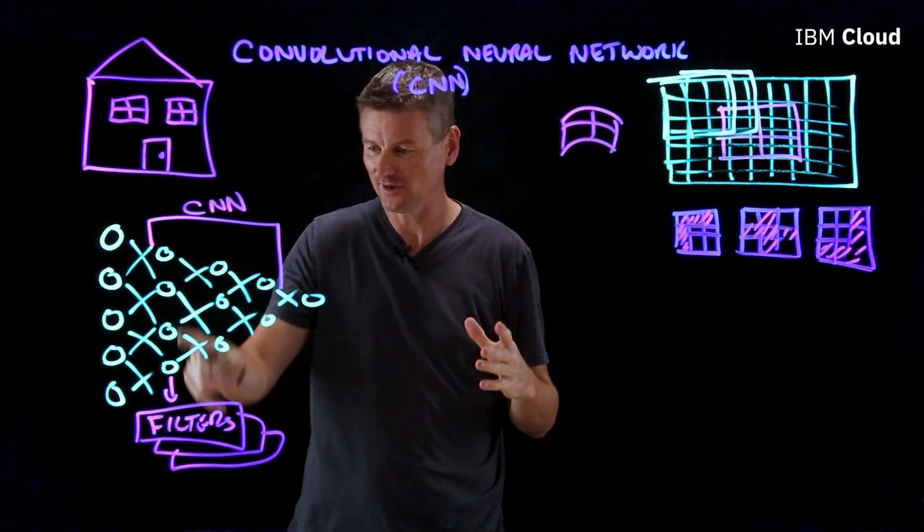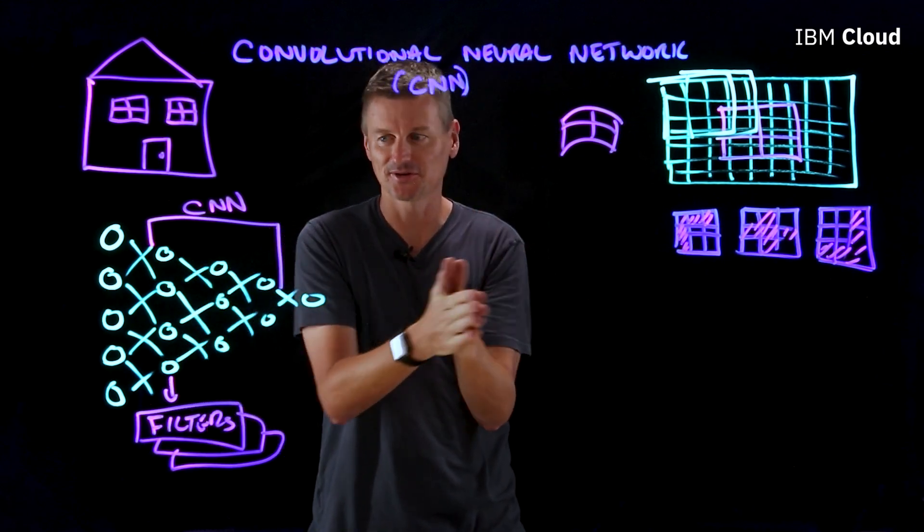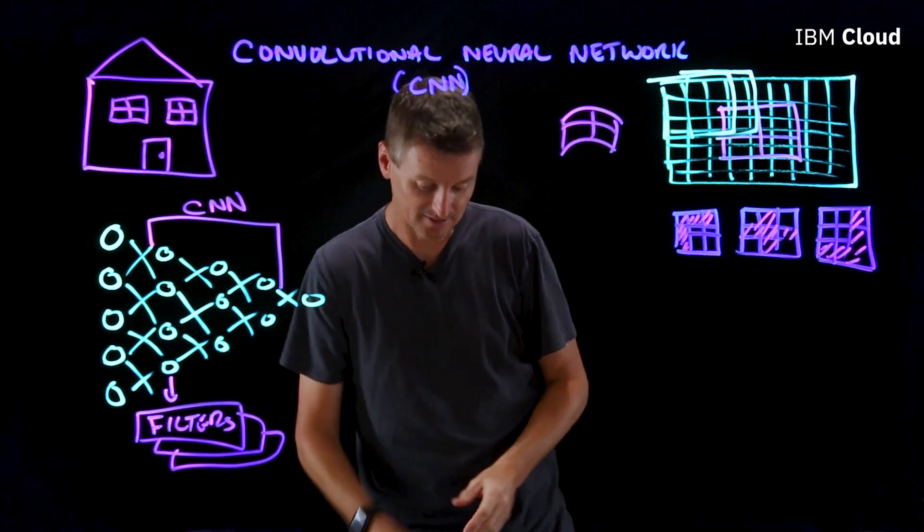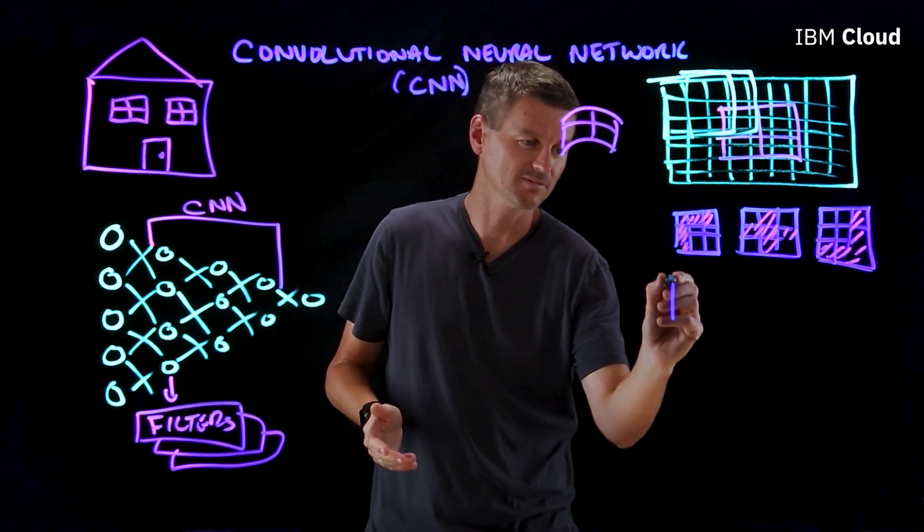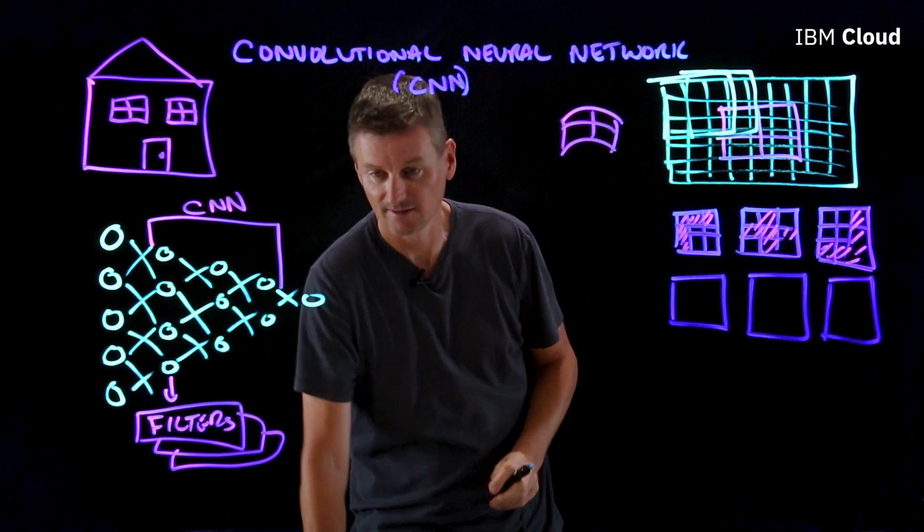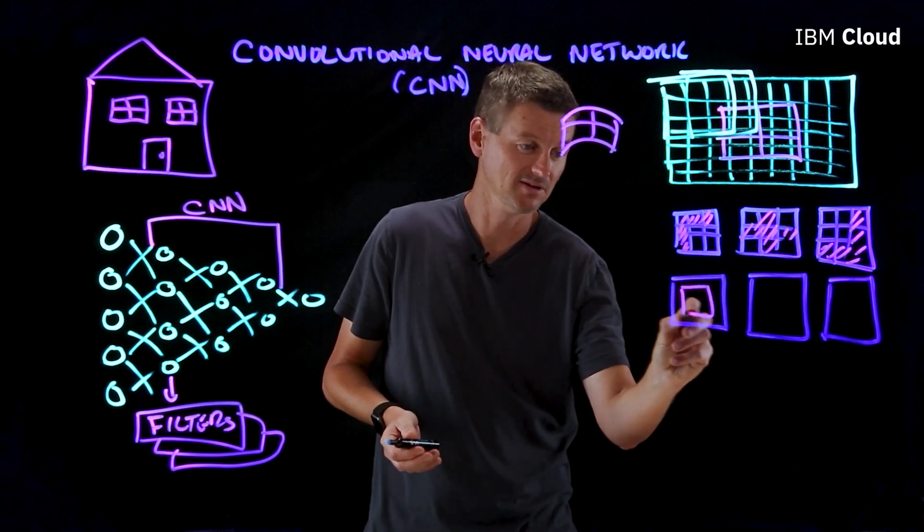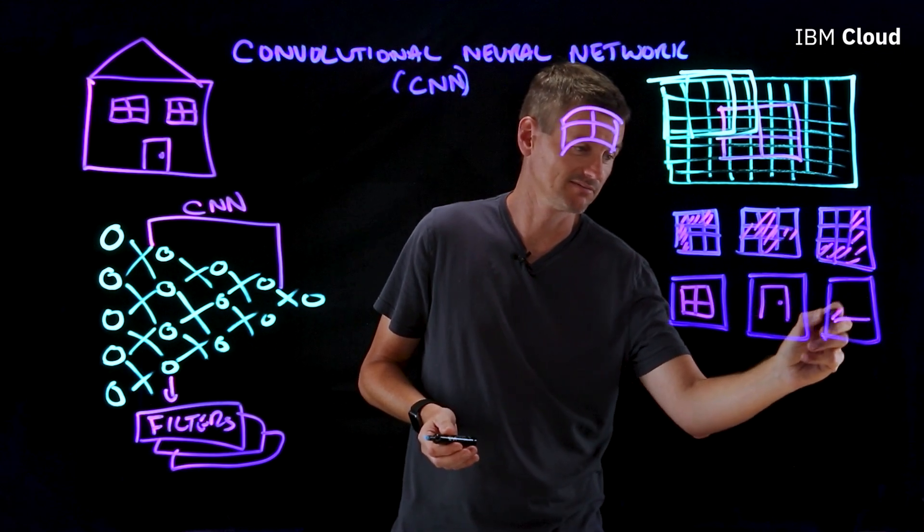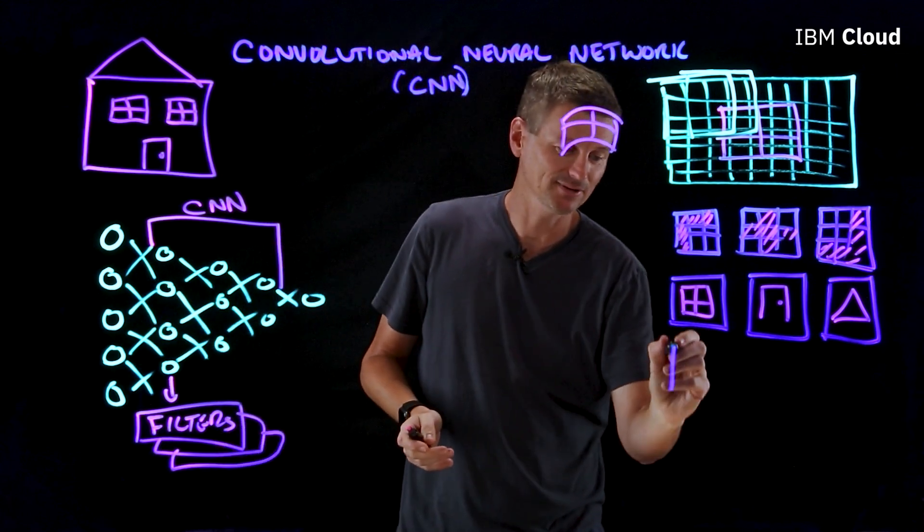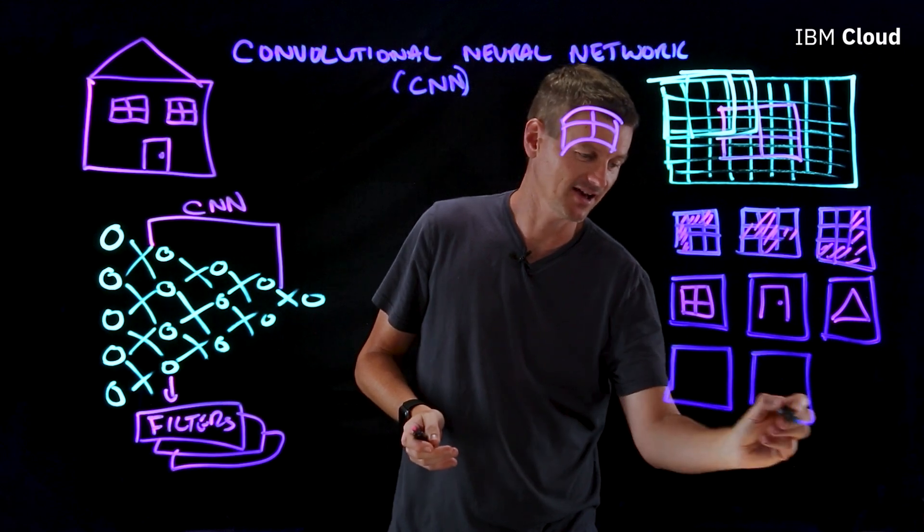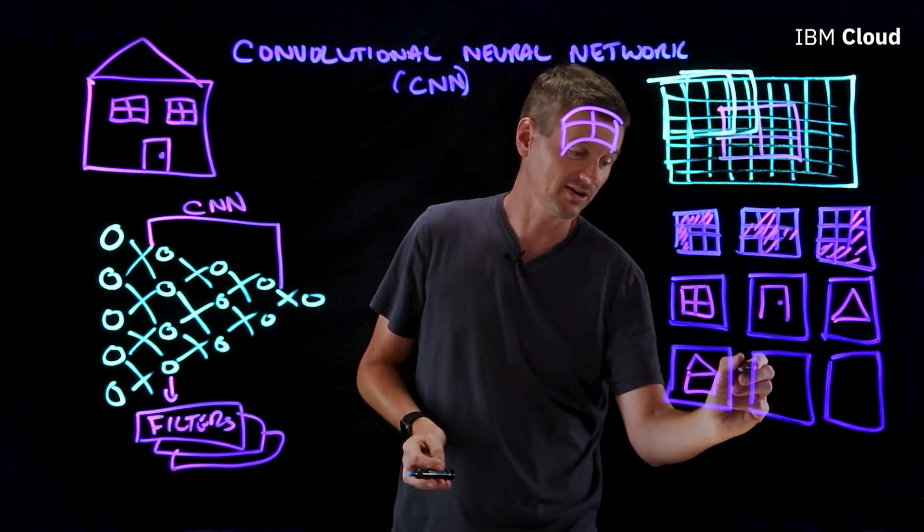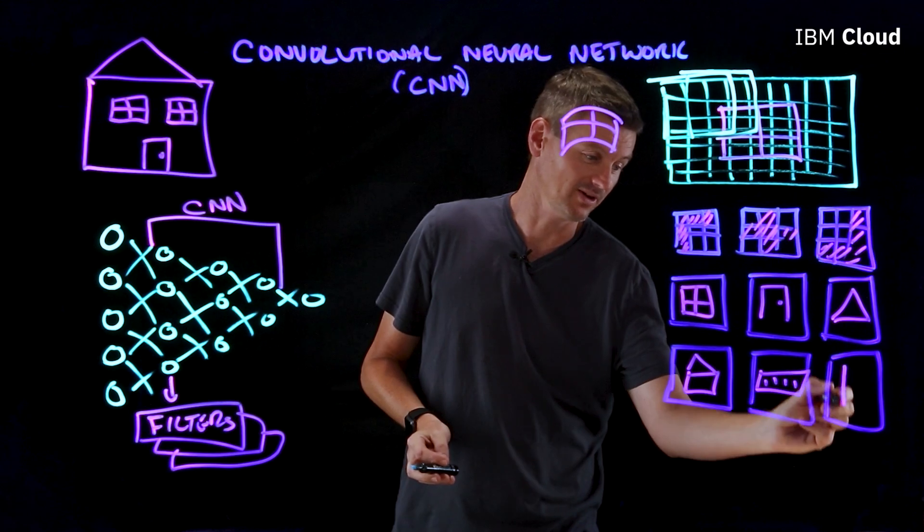Now that's just the first layer of the CNN. And as we go deeper into the neural network, the filters become more abstract, or they can do more. So the second layer of filters perhaps can perform tasks like basic object recognition. So we could have filters here that might be able to recognize the presence of a window, or the presence of a door or the presence of a roof. And as we go deeper into the CNN to the next layer, well, maybe these filters can perform even more abstract tasks, like being able to determine whether we're looking at a house, or we're looking at an apartment, or whether we're looking at a skyscraper.